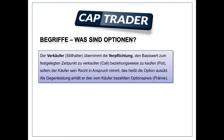Der Verkäufer, auch genannt Stillhalter, übernimmt die Verpflichtung, die Aktien zu einem festgelegten Zeitpunkt zu verkaufen beim Call, beziehungsweise zu kaufen beim Put. Sofern der Käufer sein Recht in Anspruch nimmt, also die Option ausübt, erhält der Verkäufer als Gegenleistung den vom Käufer bezahlten Optionspreis, also die Prämie. Zum Beispiel kaufen Sie einen Call für 200 Euro, dann bekomme ich als Verkäufer die 200 Euro und dafür haben Sie das Recht, die Option auszuüben.